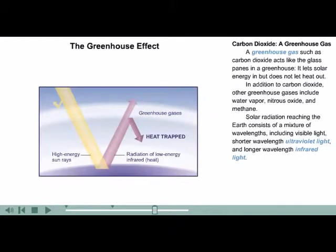A greenhouse gas, such as carbon dioxide, acts like the glass panes in a greenhouse. It lets solar energy in, but does not let heat out.